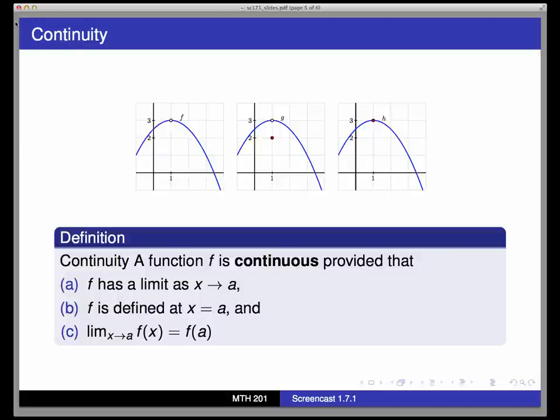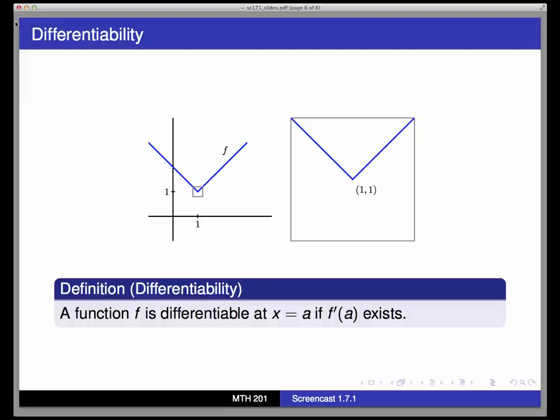So the third and final big idea in this section is differentiability. We defined a function f to be differentiable at a point x equals a if f prime of a exists, which means that the graph of f of x must have a tangent line at x equals a with a well-defined slope.